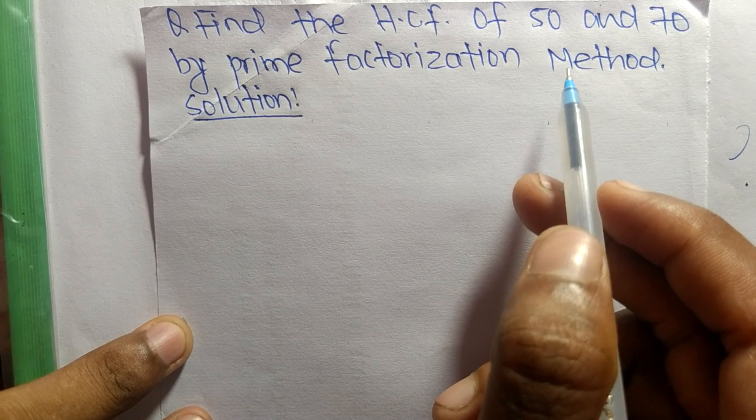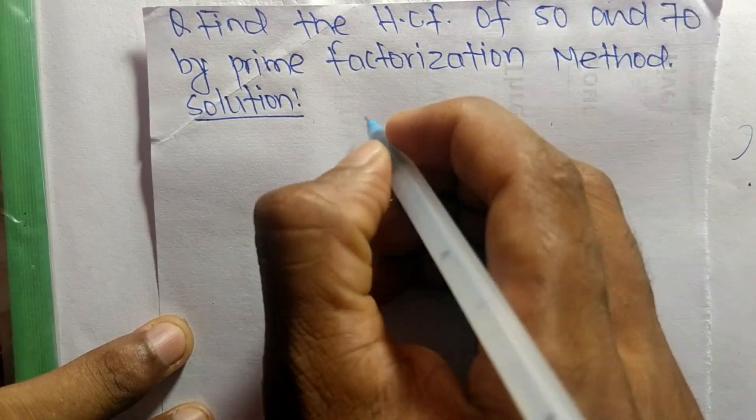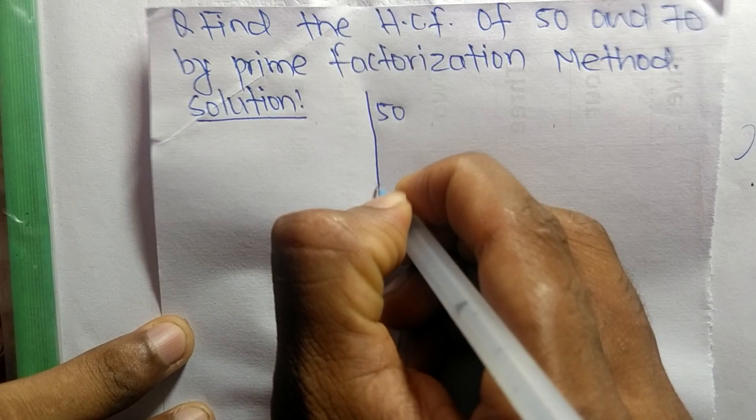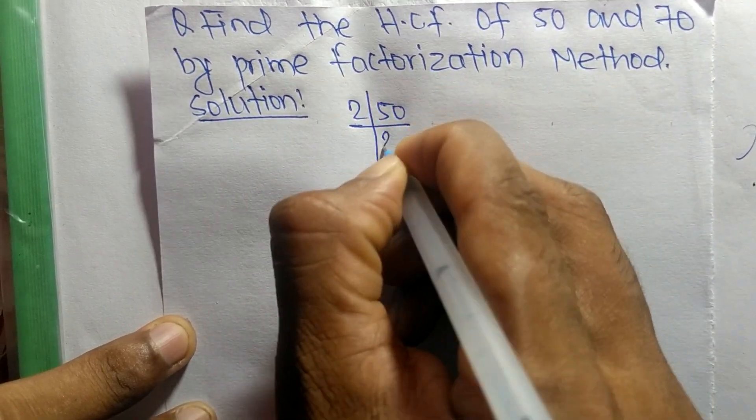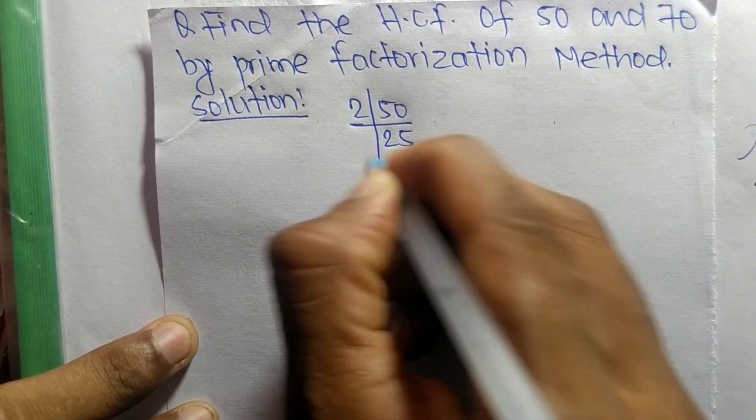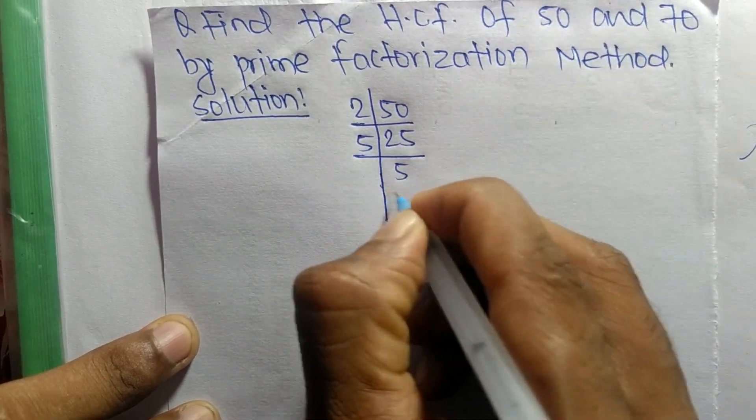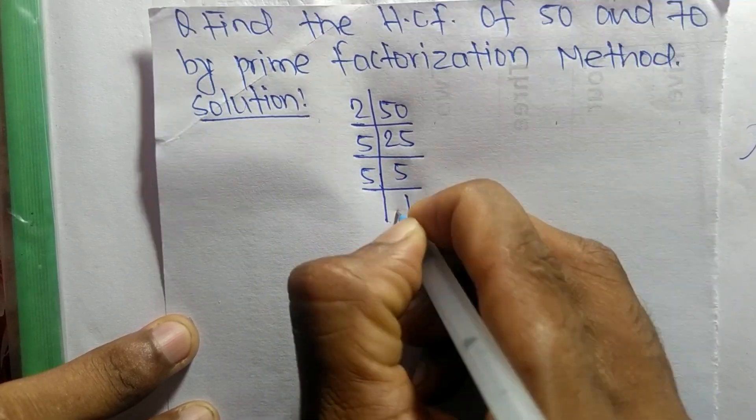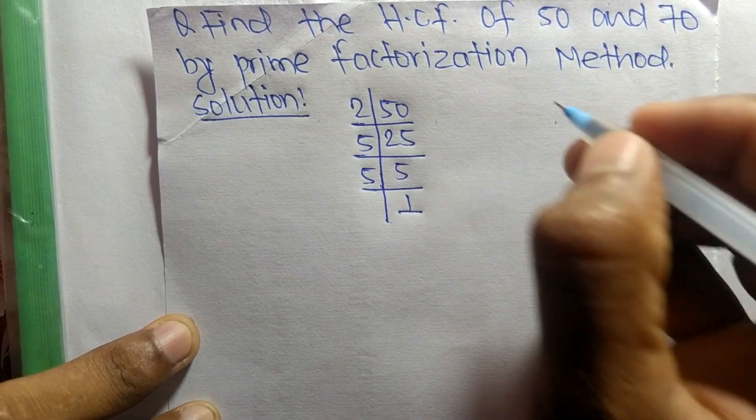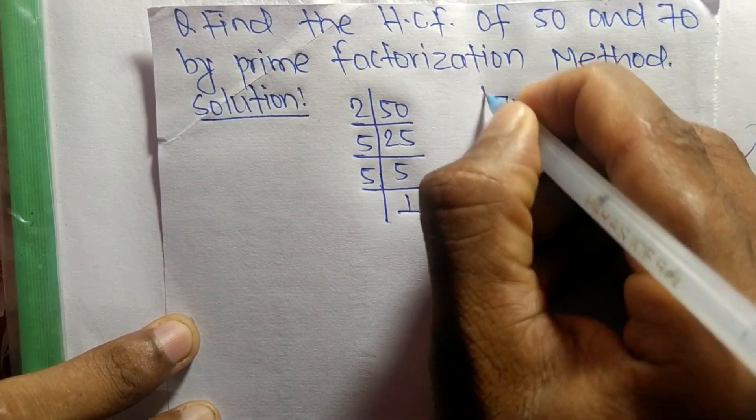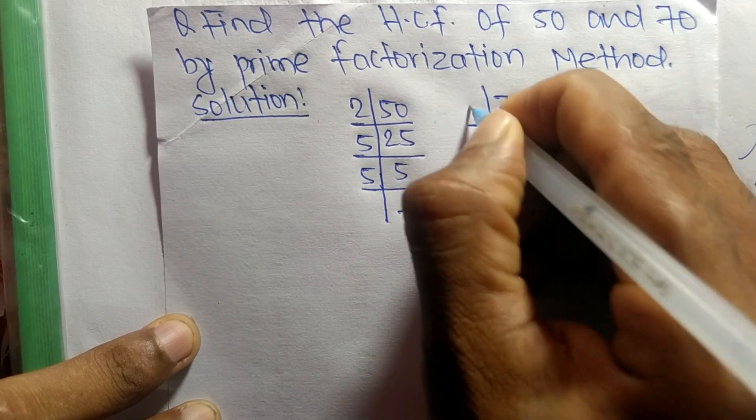First, we find out the prime factors of 50. So it is 2 times 25 equals 50, 5 times 5 equals 25, and 5 times 1 equals 5. Like this, the prime factors of 70 are: 2 times 35 equals 70,